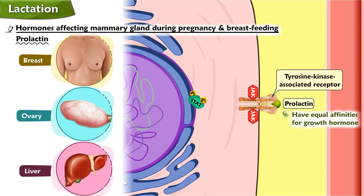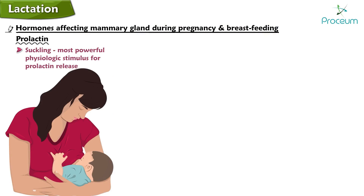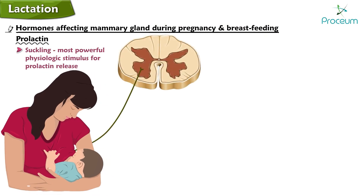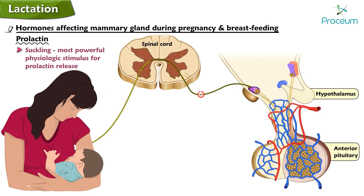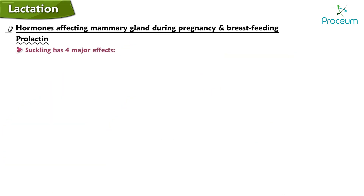The actions of prolactin on the mammary glands include promotion of mammary growth (mammogenic effect), initiation of milk secretion (lactogenic effect), and maintenance of milk production once established (galactopoietic effect). Via pathways initiated by protein phosphorylation at tyrosine residues, prolactin stimulates transcription of genes encoding milk proteins including lactalbumin and casein. Suckling is the most powerful physiologic stimulus for prolactin release; nipple stimulation triggers prolactin secretion via an afferent neural pathway through the spinal cord, inhibiting dopaminergic neurons in the median eminence of the hypothalamus. Because suckling decreases dopamine delivery via the portal vessels, it relieves inhibition on the lactotrophs and stimulates bursts of prolactin release.